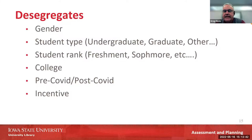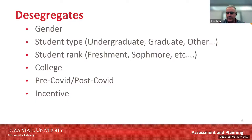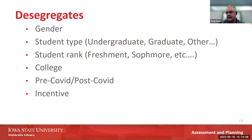We were also able to disaggregate the data in different ways — matching it up with student gender, student type such as undergraduate or graduate, class standing, and what college they belong to. We can also look at pre-COVID versus post-COVID data. Additionally, we can look at the surveys where we offered incentives and compare response rates and results between incentive and non-incentive surveys.